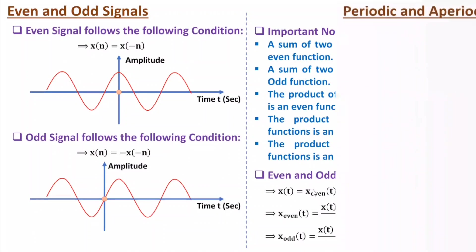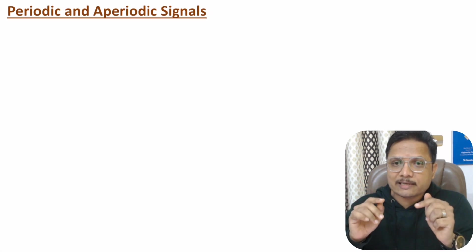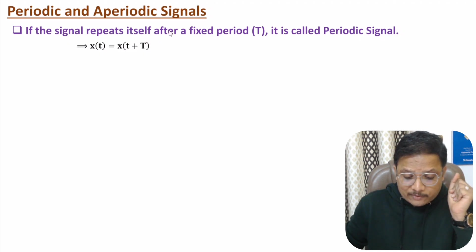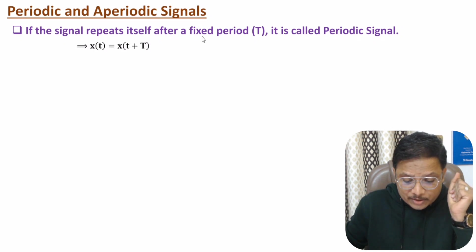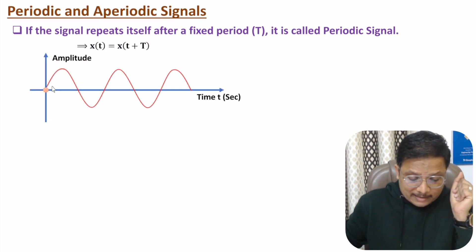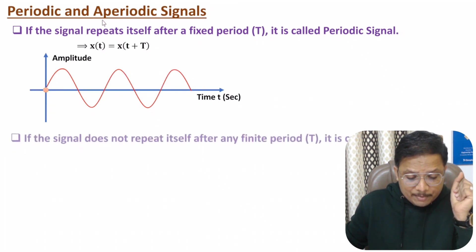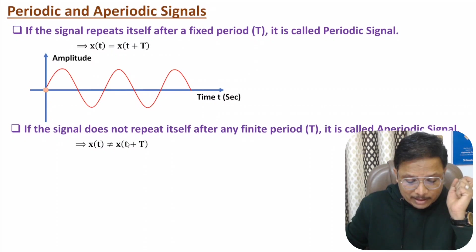Now I will explain periodic and aperiodic signals. If a signal is repeated after a finite duration, it is a periodic signal — it repeats itself after a fixed period. So if the signal is X(t) and it repeats after time T, then X(t) = X(t + T). A classic example is the sinusoidal signal, where after duration T the signal repeats.